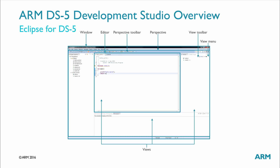Eclipse for DS5 is an integrated development environment, or IDE, that combines the Eclipse IDE from the Eclipse Foundation with the compilation and debug technology of the ARM tools. It includes a Project Manager, which enables you to perform various project tasks such as adding or removing files and dependencies to projects, importing, exporting or creating projects, and managing build options. Editors enable you to read, write, or modify C, C++, or ARM assembly language source files.